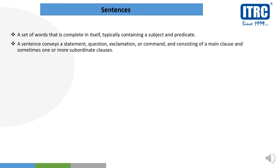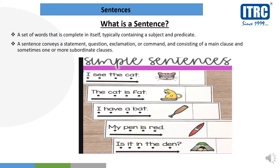Whatever you want to communicate, you do it through sentences. A sentence contains a main clause and sometimes one or more subordinate clauses. For example, simple sentences: 'I see the cat' — this is a complete sentence meaning 'I saw a cat.' 'The cat is fat' is also a full sentence. 'I have a bat,' 'My pen is red,' and 'Is it in the den?' — this last one is a question, but it is also a sentence.